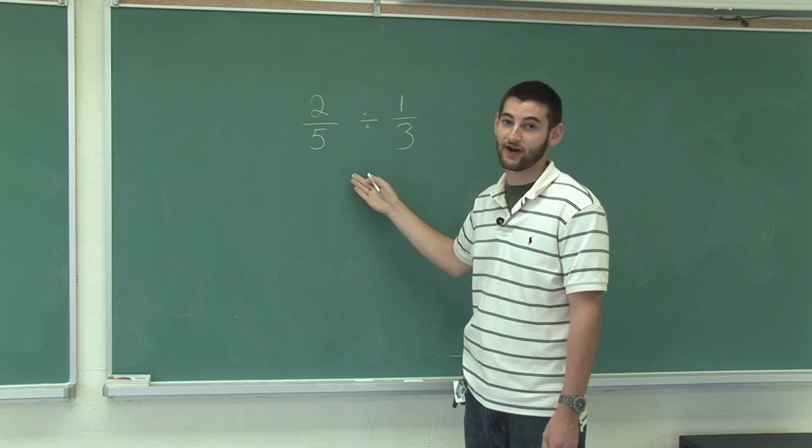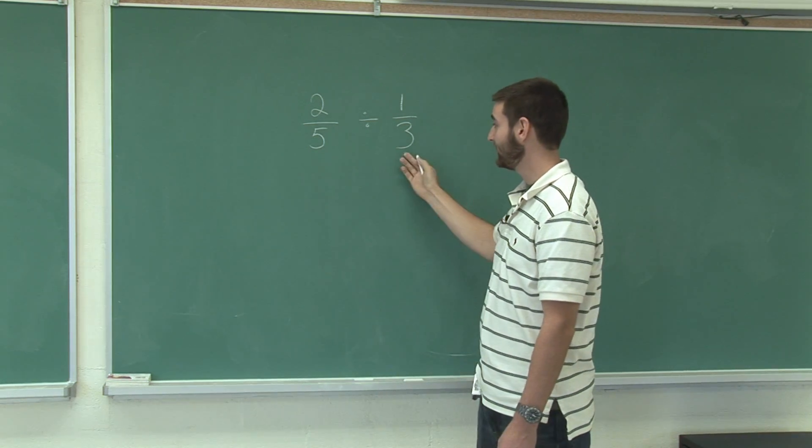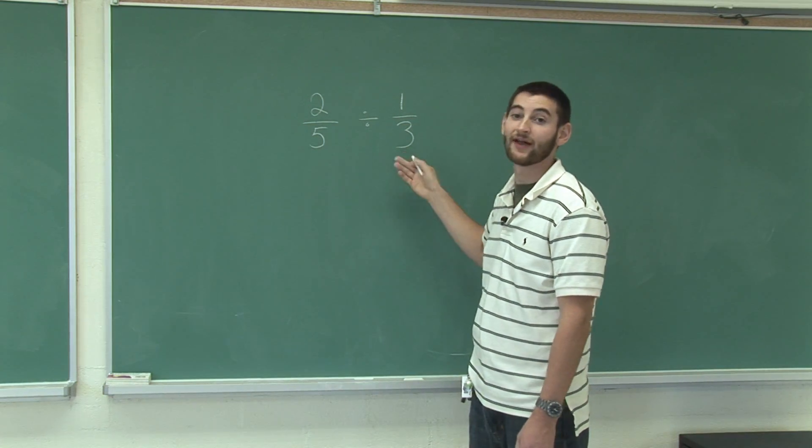Since there's no way to directly divide these fractions, what you're going to do is invert the second fraction and then multiply.